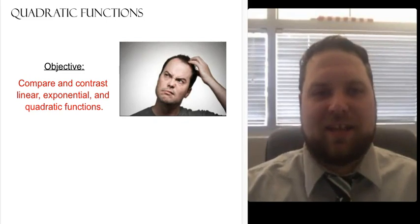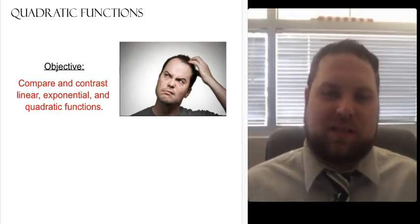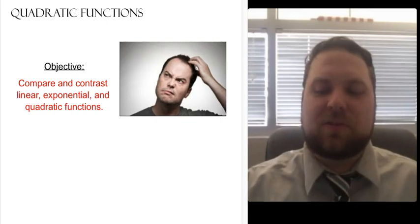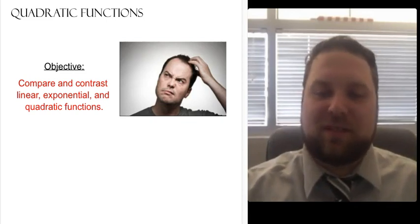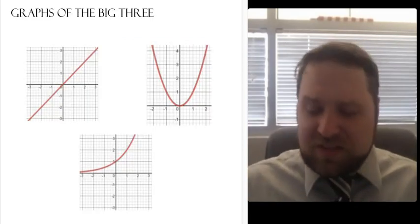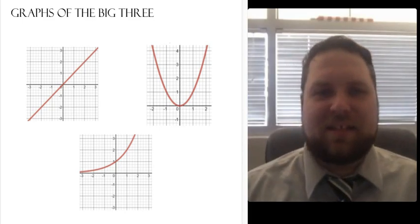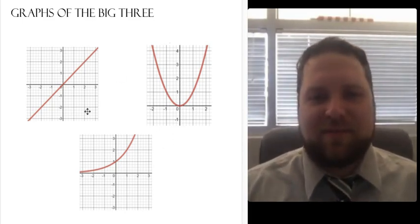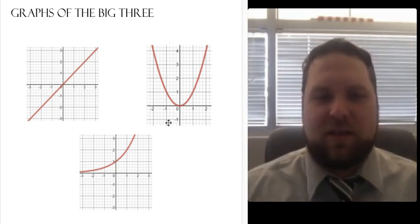So we're going to look at it in three different ways. We're going to look at the graphs, we're going to look at the equations, and we're going to look at the tables for each of these three different classes. So first let's look at the graphs. Here we have graphs of parent functions for linear, exponentials, and quadratics. And so what I want to do is help you see the identifying features of each.